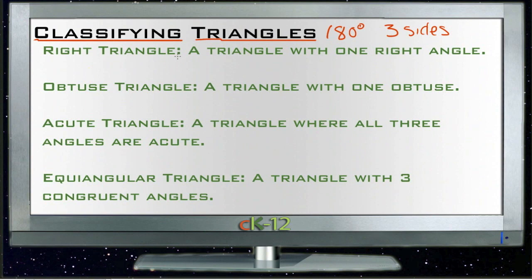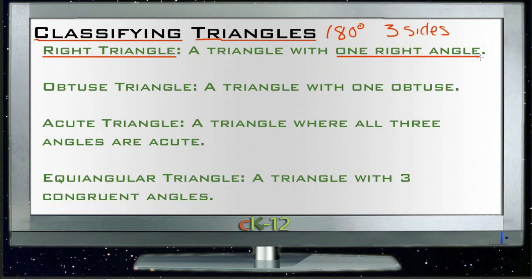When you're classifying triangles by angle, you look at that other angle that's not necessarily one of the two acute ones. A right triangle is a triangle that has one right angle — that third angle happens to be exactly 90 degrees.